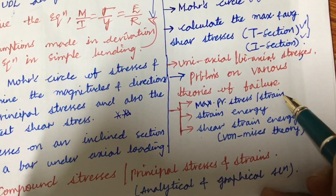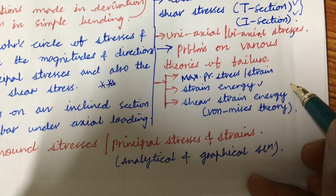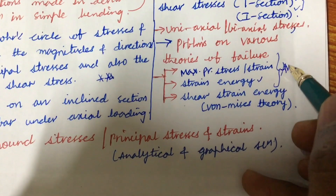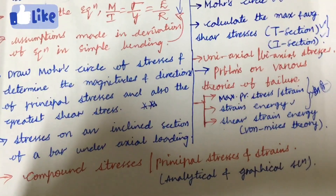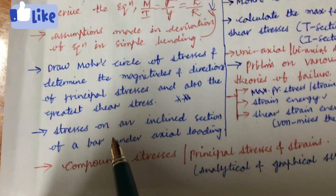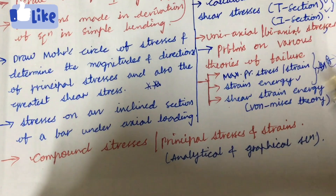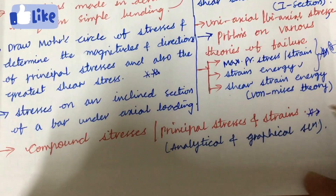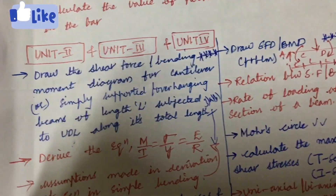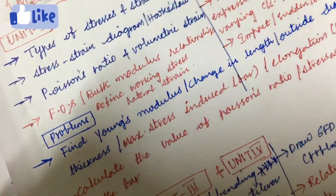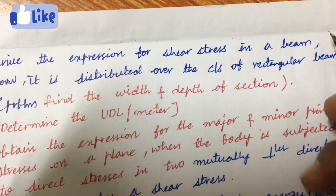Uniaxial and biaxial stresses and related problems are very important. Problems on various theories of failure — related to maximum stress, maximum principal strain, strain energy, and shear strain energy (von Mises theory) — are gunshot questions worth 15 marks. You will get one problem or be asked to write all the different types of failure theories. Also important: stresses on an inclined section of a bar under axial load, compound stresses, principal stresses and strains. One key gunshot question is: derive an expression for shear stress in a beam.